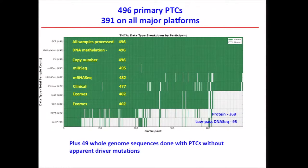This is our cohort. We had up to 496 tumors, with 391 on all platforms. And we had 49 whole genomes targeted at tumors that didn't have obvious driver mutations.